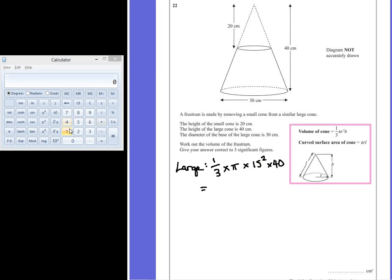If we put this into our calculators, we have π multiplied by 15 squared multiplied by 40 divided by 3, giving us a volume of 9424.778 cm³.